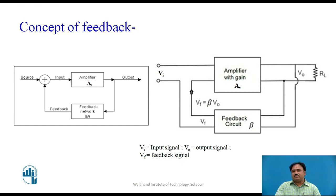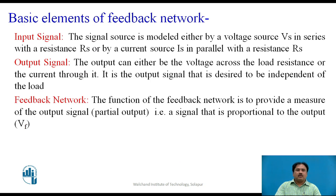The modified input voltage is the combination of Vi and the feedback voltage Vf, which equals beta times Vo. On the left side there is a summation block that adds the feedback voltage to the input voltage, either in phase or out of phase. If it is out of phase it is called negative feedback. These are the basic elements of the feedback network: the input signal from the source and the output voltage of the amplifier, which has two states — without feedback and with feedback.